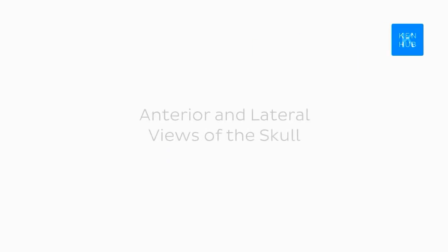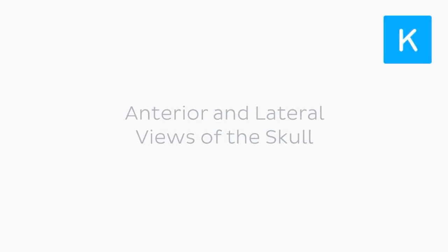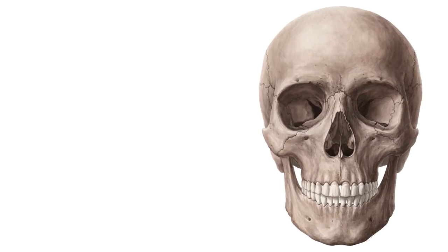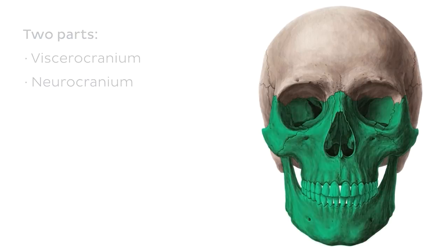Specifically, we're going to be talking about the bones that we see when we look at the skull from an anterior and a lateral perspective. But before we get on to that, let me explain some important terminology relating to the skull. The skull is divided into two parts — the viscerocranium and the neurocranium. And I know these terms sound a bit scary, but they're nothing to be scared about.